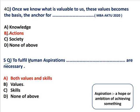Question 5: To fulfill human aspiration, what is necessary? To fulfill human aspiration — to fulfill one's desires — what is needed? Both value and skill is the correct answer. Aspiration means a hope or ambition of achieving something.